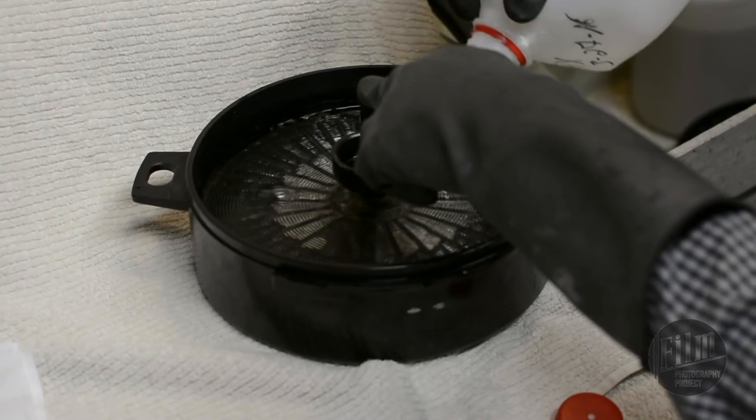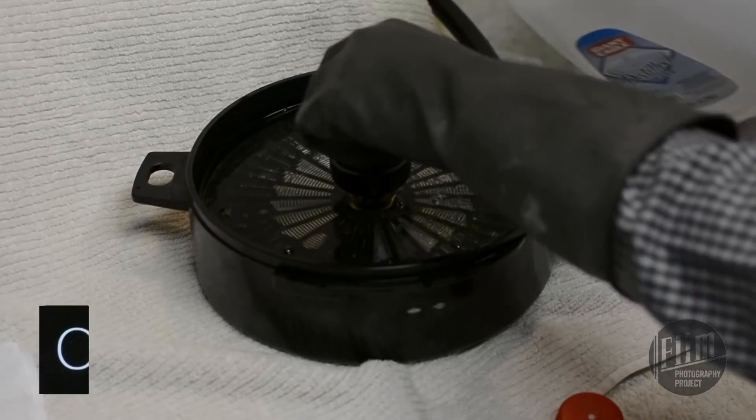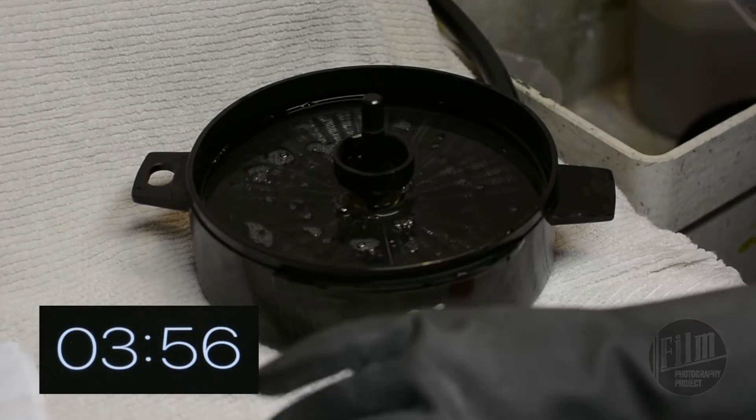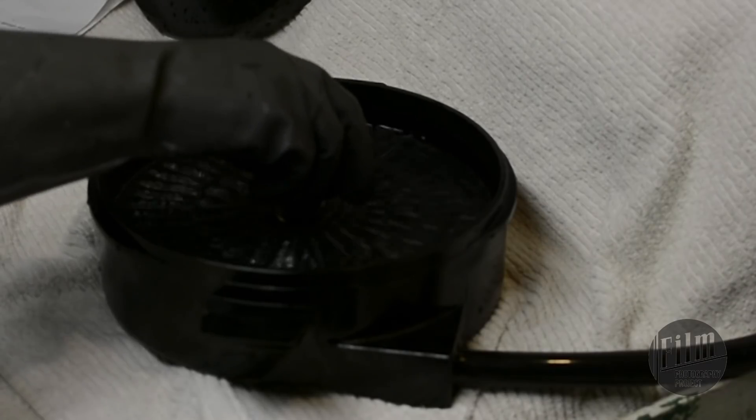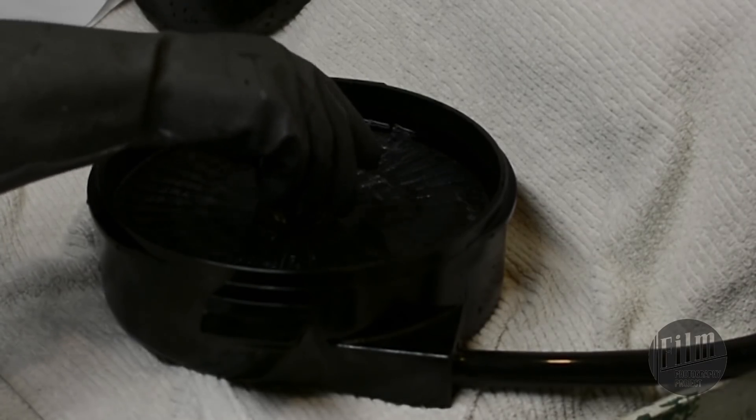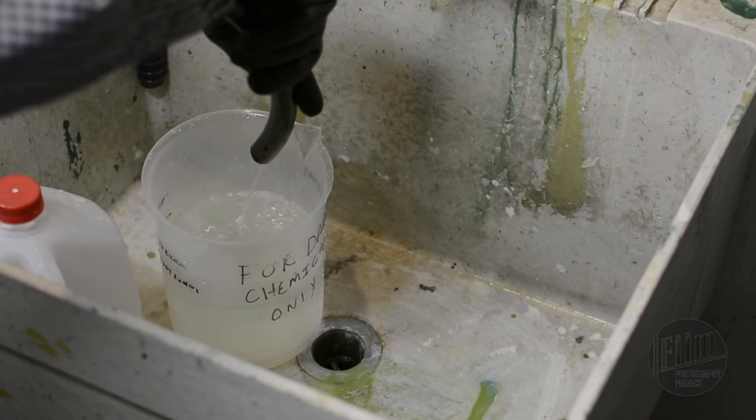Now we fix. Add the fixer to the tank. Set a timer for 4 minutes. Agitate the spindle every 30 to 40 seconds. Drain the fixer back into its container.